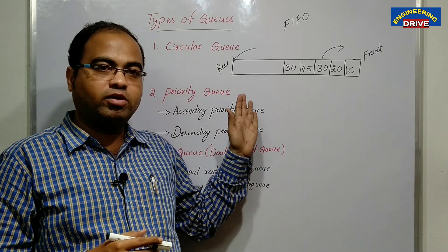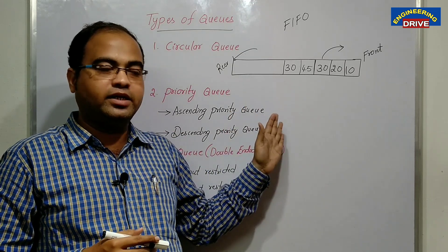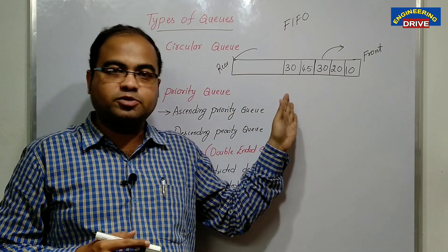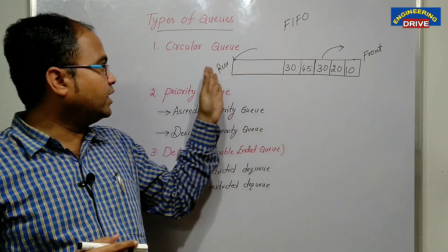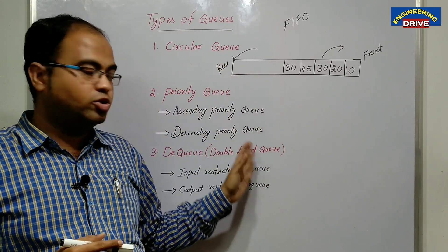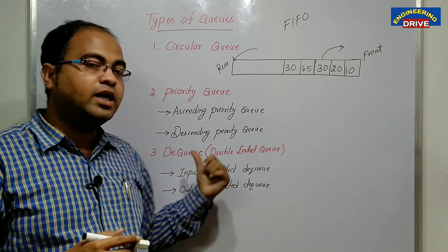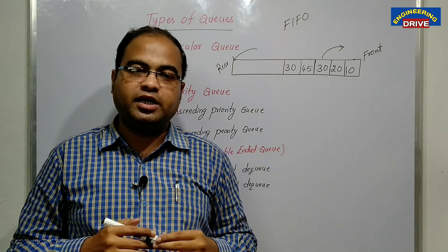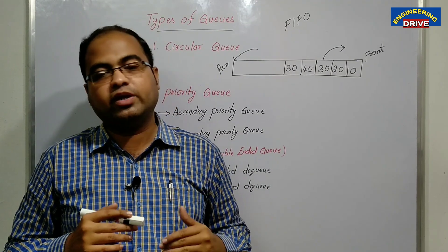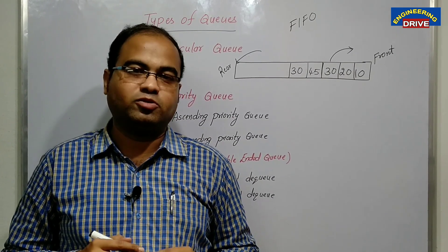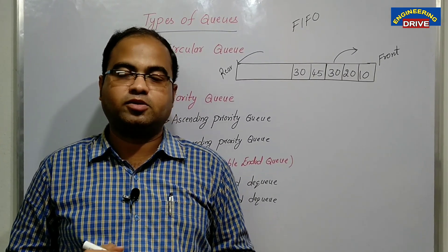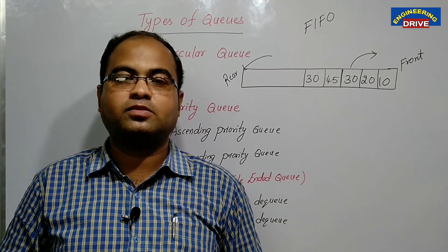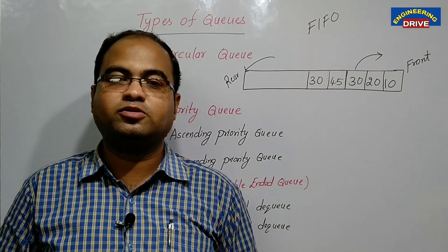Hopefully you now have a clear understanding of the differences between circular queue, priority queue, and double ended queue. If you have good knowledge of the theory, then you can automatically implement it in programs as well. With this, let us close today's session. See you soon. Take care.